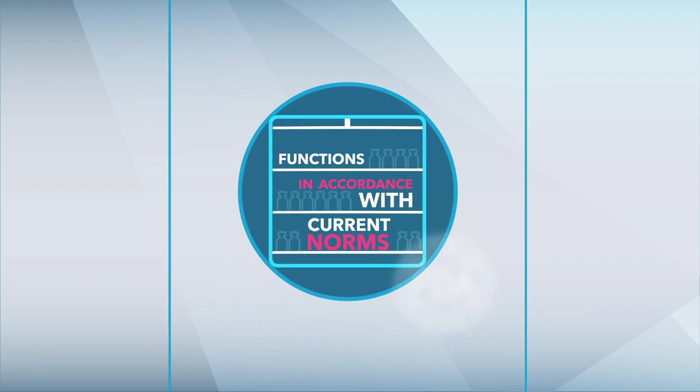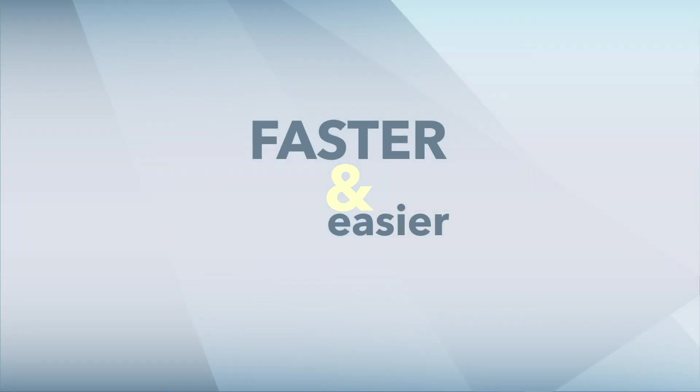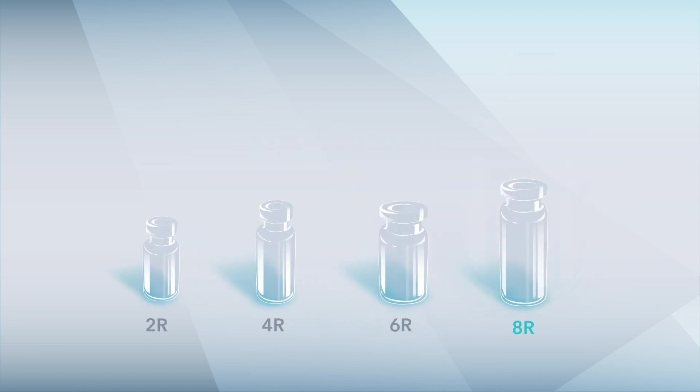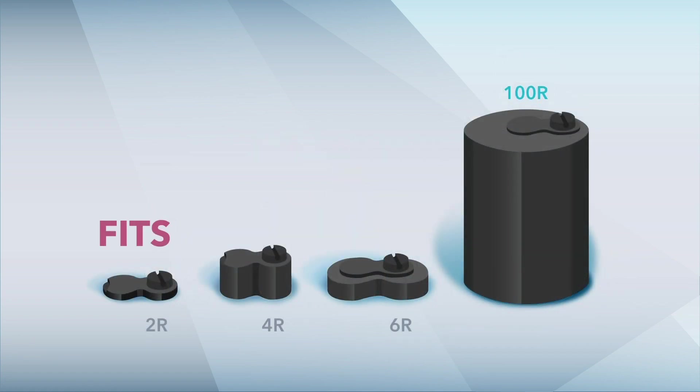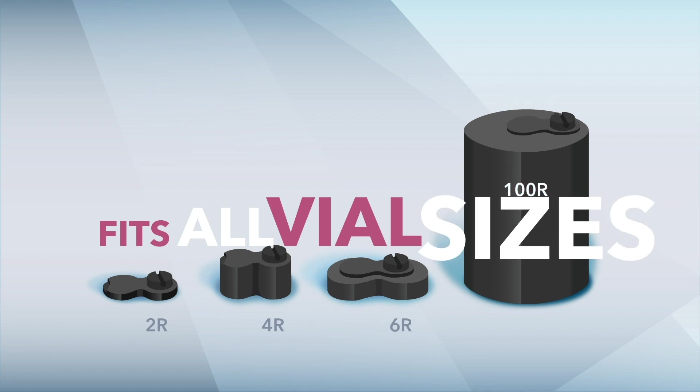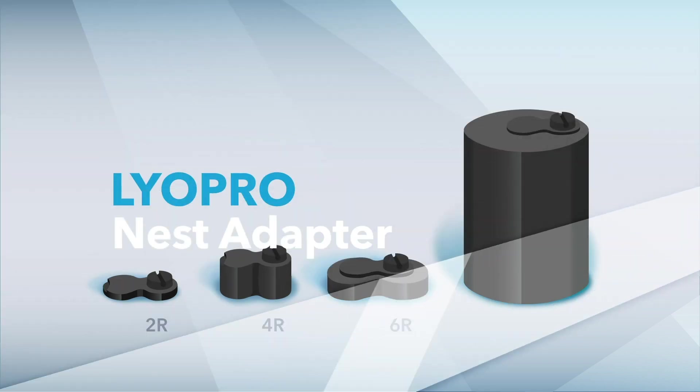LiO Pro ensures that your freeze dryer functions in accordance with current norms and makes your process development faster and easier. LiO Pro is ideal for freeze dryers in a CGMP environment with isolators and automatic loading, as it fits all vial sizes by using the LiO Pro Nest adapter.